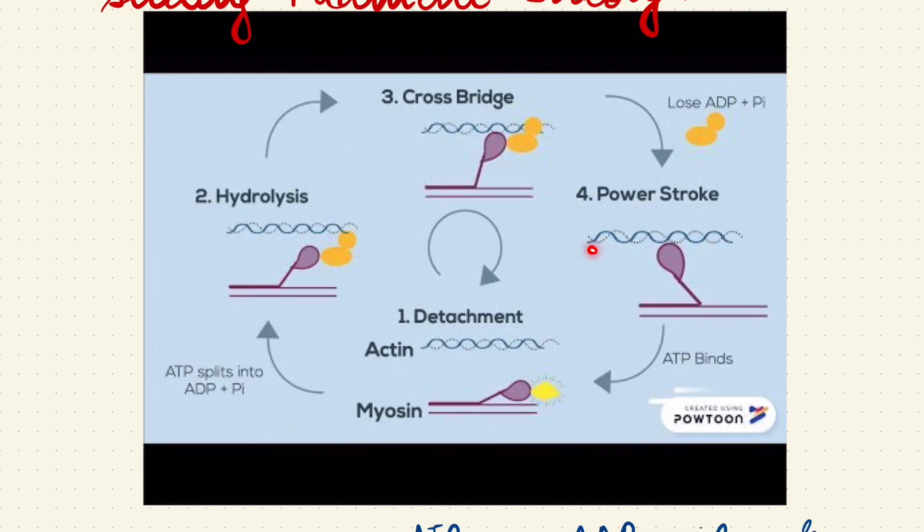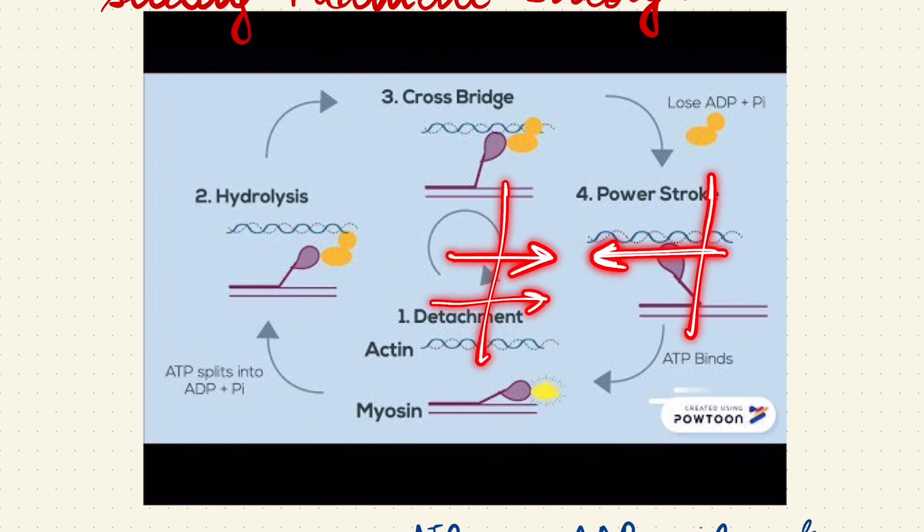Now you can see, if the actin slides over myosin and comes this way, the sarcomere will automatically shorten.